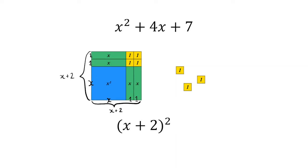If we now consider our positive three tiles we have x plus 2 squared plus 3 and so in completed square form x squared plus 4x plus 7 is x plus 2 squared plus 3.